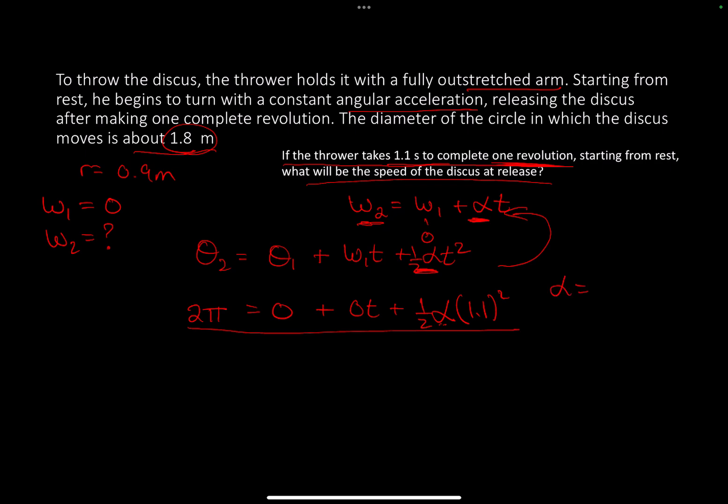I found alpha to be 10.4 radians per second squared.